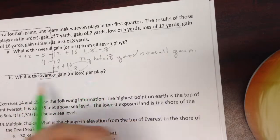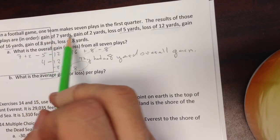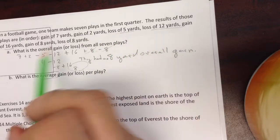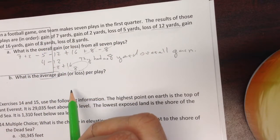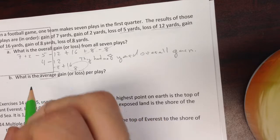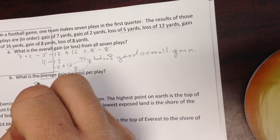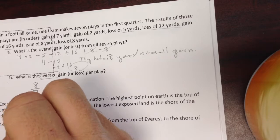Now average, you add them all up and divide by how many you had. So we have 1, 2, 3, 4, 5, 6, 7. So they had gained 8 yards, I'm going to divide that by 7.